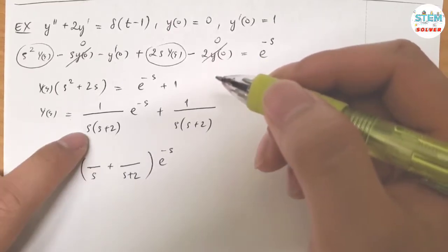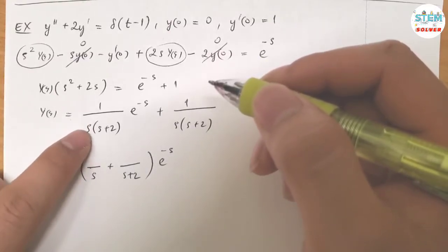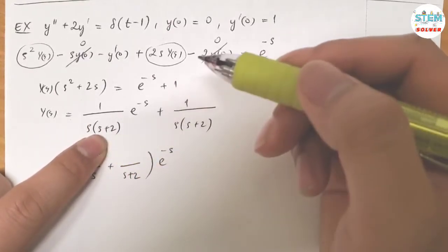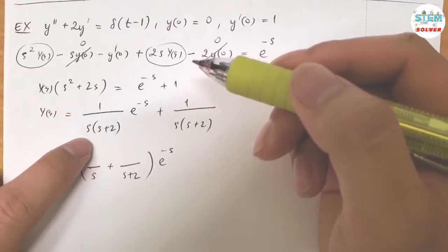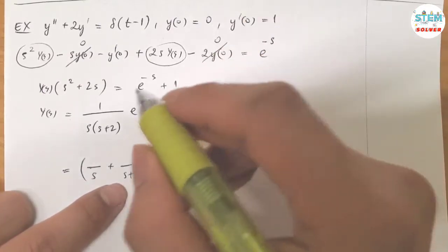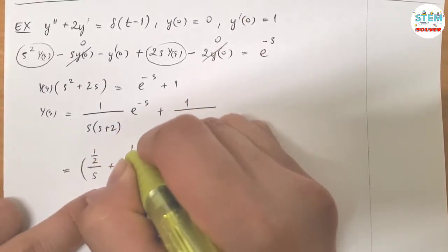Alright, so in order to use the shortcut, you need to have the S and S to the first power, right? So this one is S plus 0 times S plus 2. So they are off by 2, right? So I'm going to have one half on top.